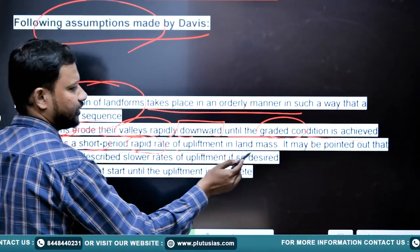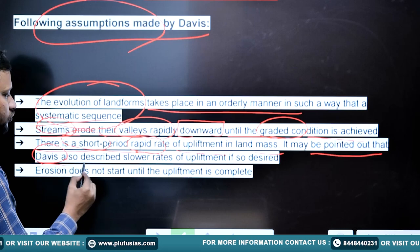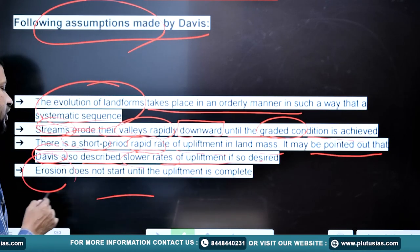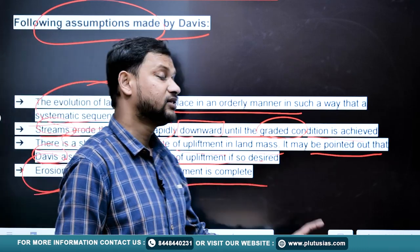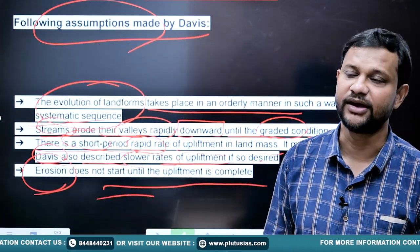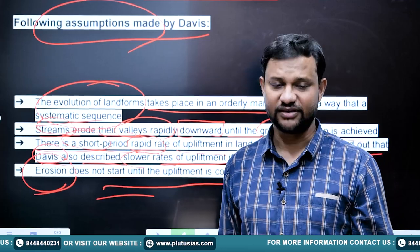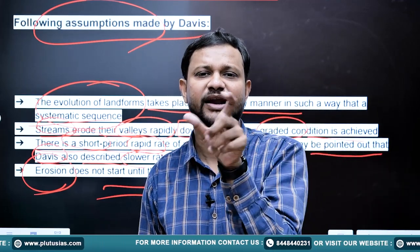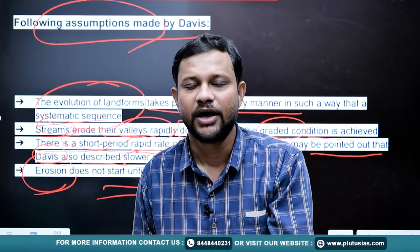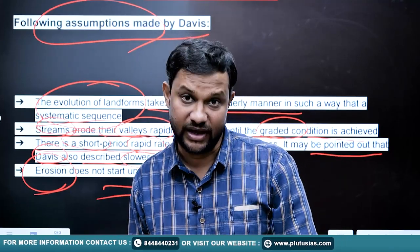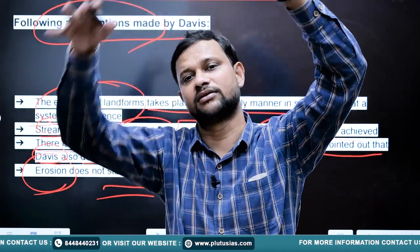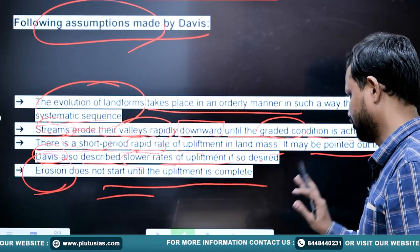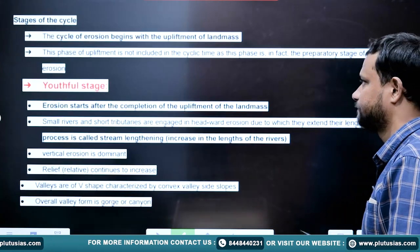Davis also described slower rates of upliftment and assumed that erosion does not start until upliftment is complete — like inhalation before exhalation, a kind of synchronization. He considered that upliftment would first be complete and then erosion would start. This is an equally controversial assumption. Based on this, he categorized any cyclic evolution into three stages.